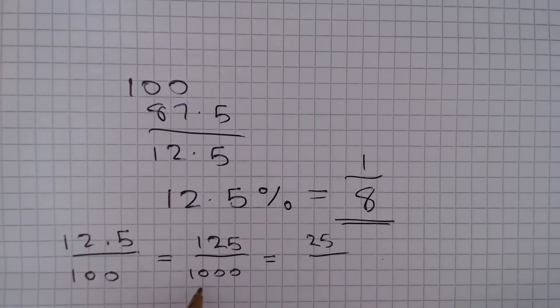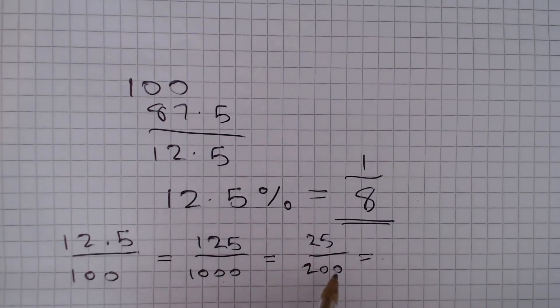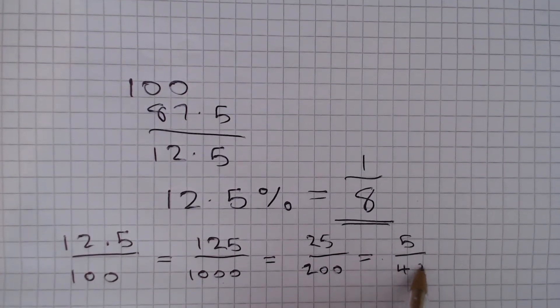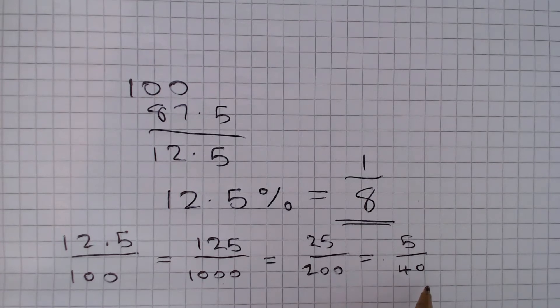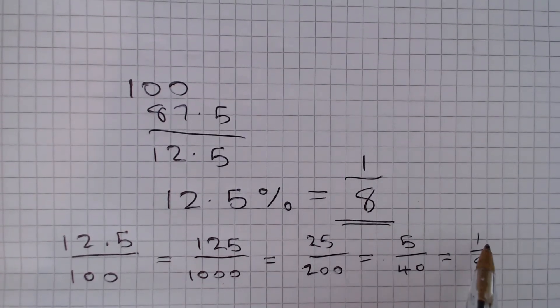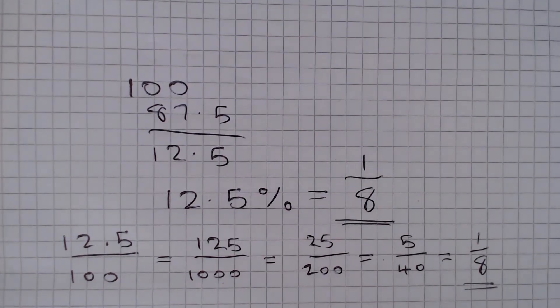And we are going to get 1000 divided by 5 is 200. And again, we have got a 5 and a 0, we can divide the top and bottom by 5, so we are going to get 5 over 40, and again we can divide by 5, so we are going to get 1/8. Because 5 divided by 5 is 1, 40 divided by 5 is 8, so the answer is 1/8.